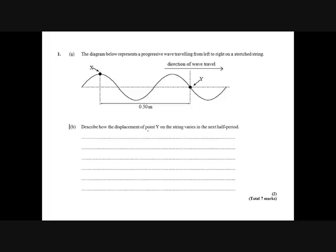Describe how the displacement of point y varies in the next half period. This is where some people will get this wrong because they think y is moving down and doing this, so it's going to go down, but that's completely the wrong way to think about it. What's happening is half a period later, this point on the wave will have moved to here, so the wave's going to look something like this.